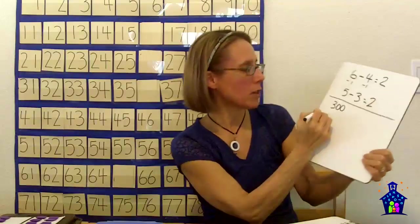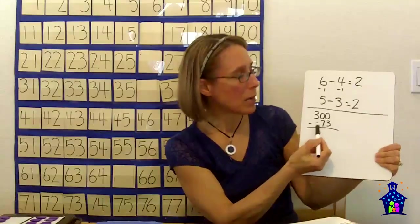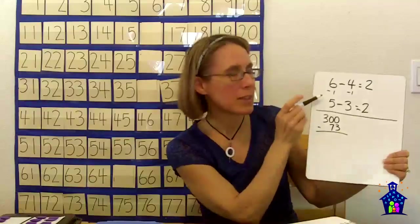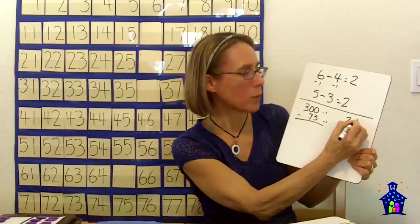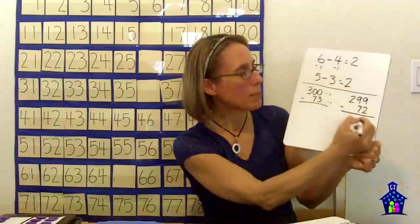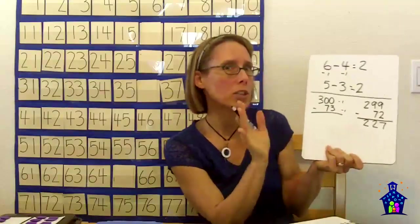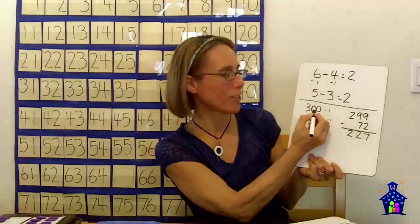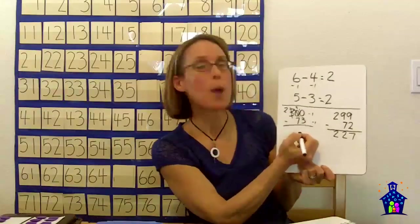We could use this for more difficult problems. For example, if I did 300 minus 73. This is the traditional algorithm I'm working with right here. We know you can't take 3 from nothing, so you've got to go over and borrow. In fact, you have to borrow again. What if we used this strategy to solve this problem and we took 1 away from each number? Now we're left with 299 minus 72. Isn't that a lot easier to solve? 9 minus 2 is 7, 9 minus 7 is 2, and then there's this 2 - 227. You don't have enough here to take 3 away, so you've got to move over and borrow. There's nothing there, so you've got to go all the way over here. Make that a 2 and make that a 10. You've got to make that a 9, and now we have 10. 10 minus 3 is 7, 9 minus 7 is 2, and then of course there are 2 there.